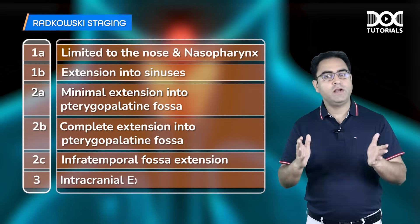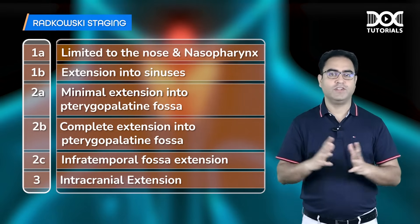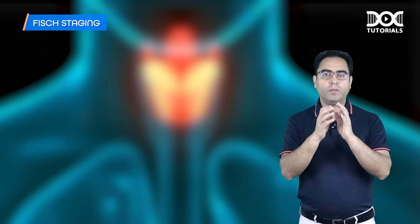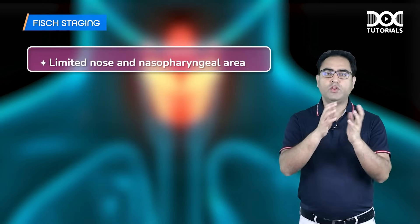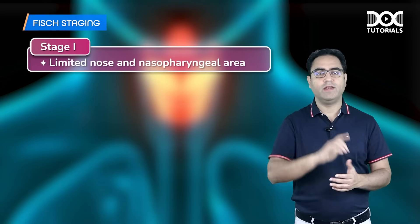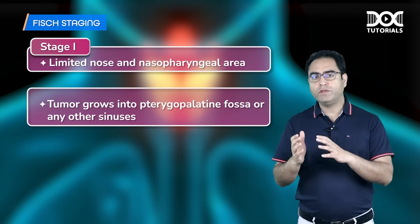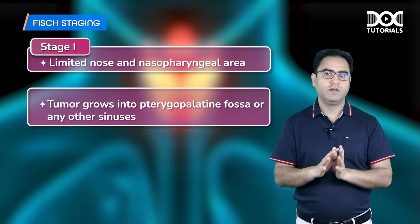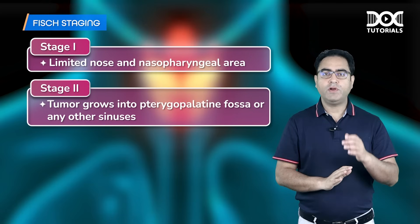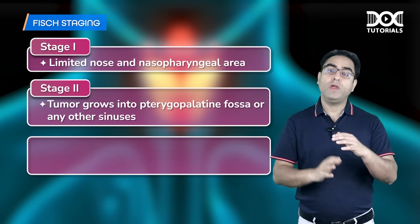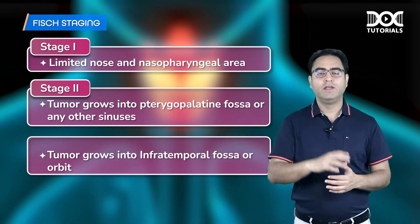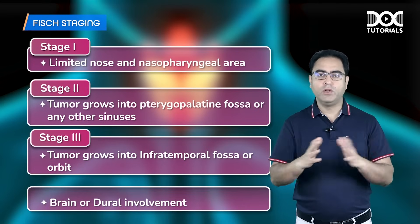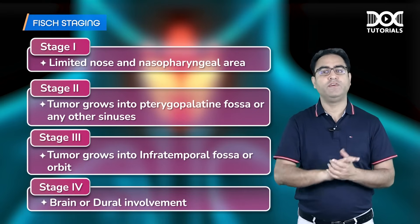Stage 3 in Radkowski staging is intracranial extension. For Fish staging: stage 1 — tumor limited to nasopharynx or nose; stage 2 — grows into pterygopalatine fossa or sinuses; stage 3 — grows into infratemporal fossa or orbit; stage 4 — brain involvement with dural involvement.